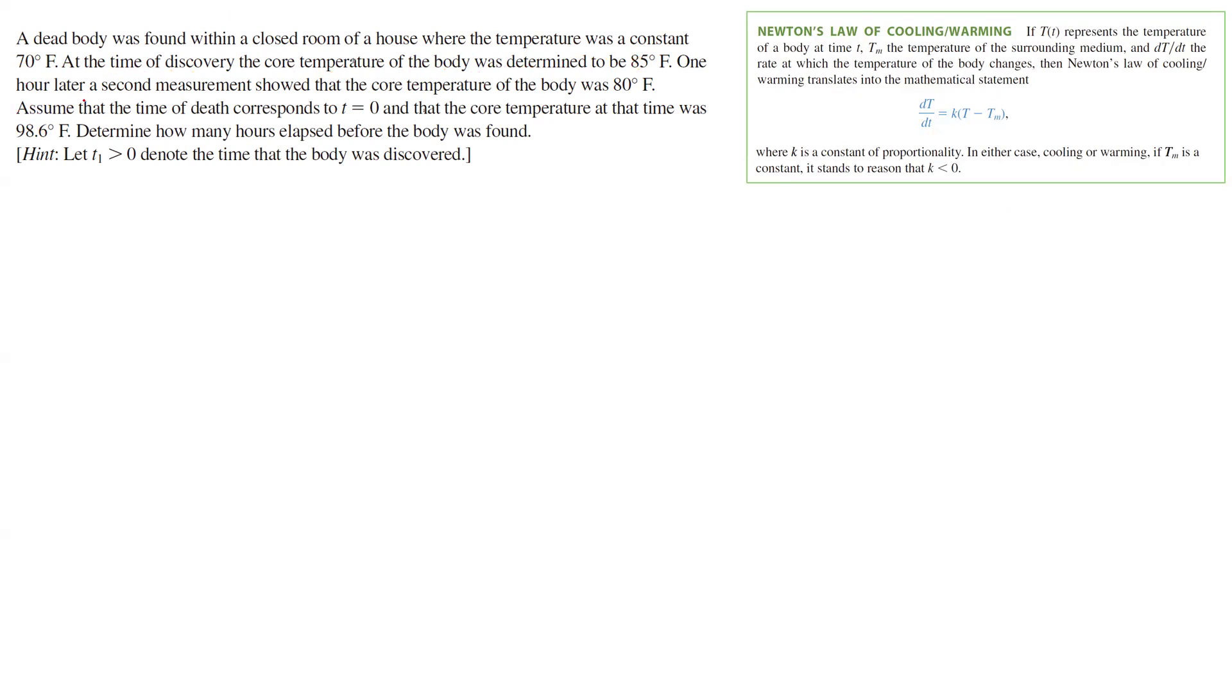One hour later, a second measurement showed that the core temperature of the body was 80 degrees Fahrenheit. Assuming that the time of death corresponds to T equals zero, and that the core temperature at the time was 98.6 degrees Fahrenheit, determine how many hours elapsed before the body was found.